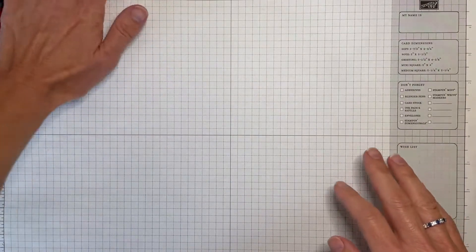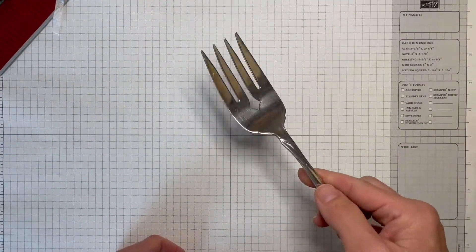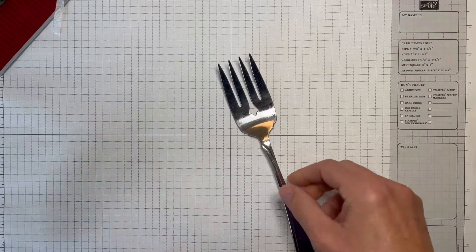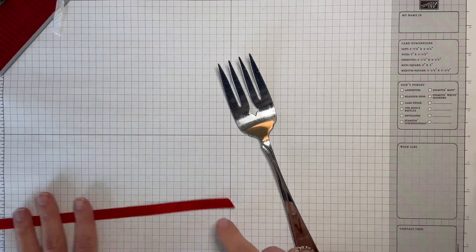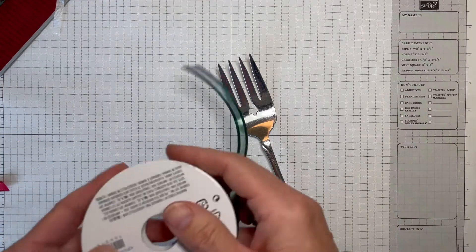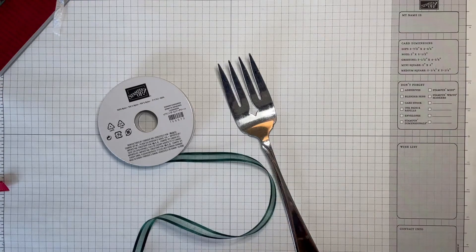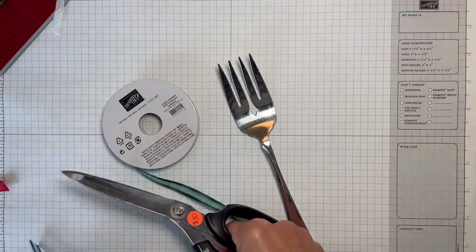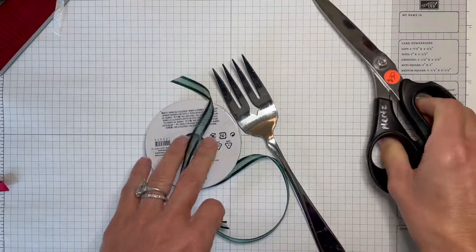Today we're going to start with a serving fork, just a generic serving fork out of my silverware drawer that actually just lives in my stamp room now. We're going to use some of the evening evergreen sheer ribbon. I'm going to cut about eight inches or so. It gives you enough room to tie it and then a little bit extra on the tails, so you can have some to trim off.